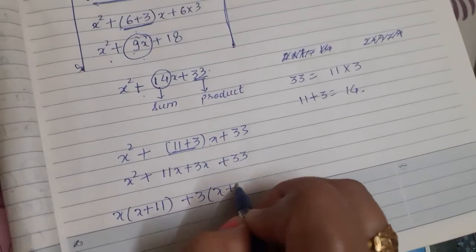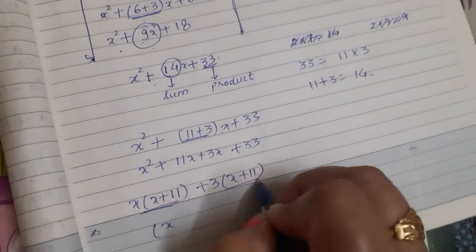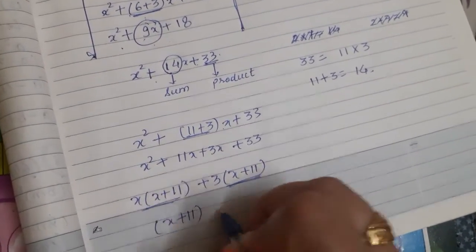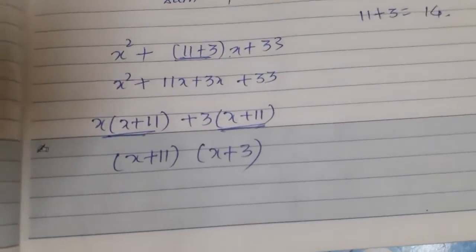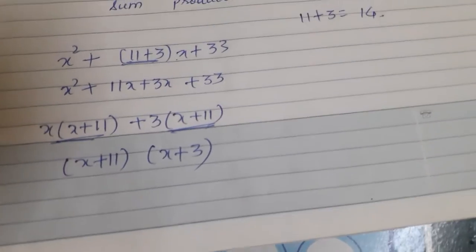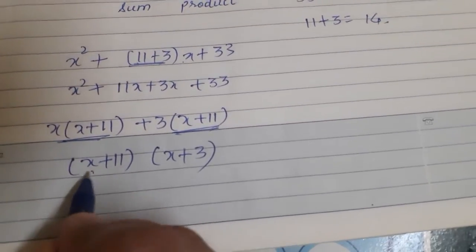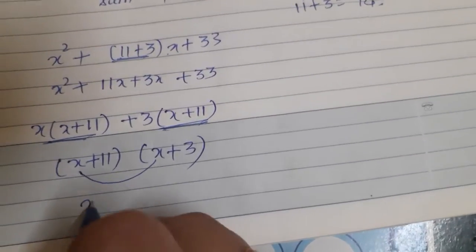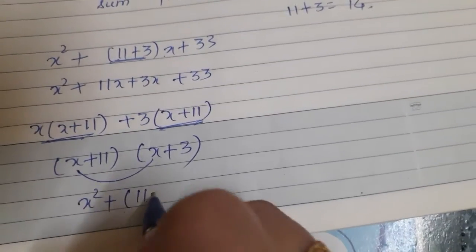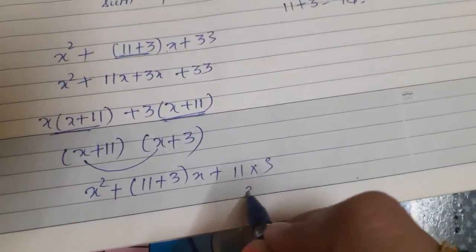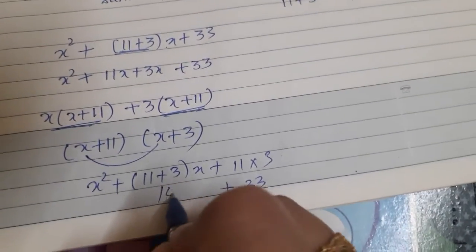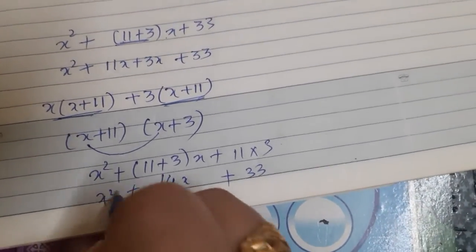Now, the common term is x plus 11 and x plus 3. And again, you can go in reverse direction. So, what will be the answer? See, x and x, it will be x square plus 11 plus 3 x and 11 into 3. It will give us 33, it will give us 14x, and it will give us x square.